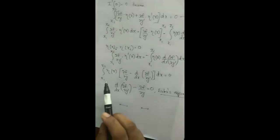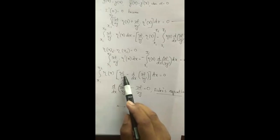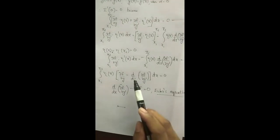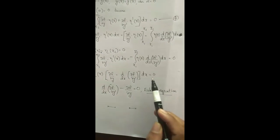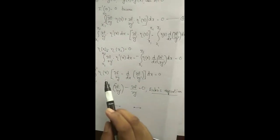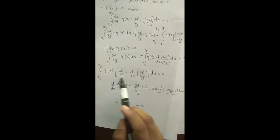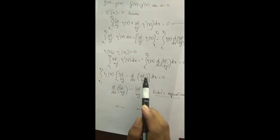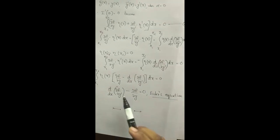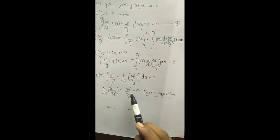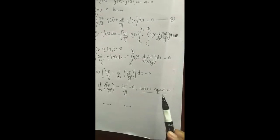Therefore, equation 4 becomes integral from x1 to x2 of η(x) · [∂f/∂y − d/dx(∂f/∂y')] dx = 0. Since this must be true for all such functions η(x), it follows that the term in the brackets must vanish. Hence, we get d/dx(∂f/∂y') − ∂f/∂y = 0, which is the Euler's equation.